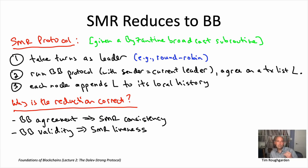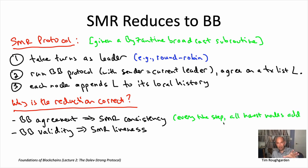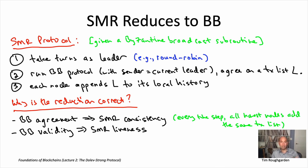Why does the safety property for Byzantine broadcast imply the one for SMR? This broadcast subroutine satisfies agreement, which says no matter what — whether or not the sender is Byzantine — the honest nodes all agree on the same value at the end of the day. Looking at our SMR protocol, that means at the end of step two, whether or not the current leader is Byzantine, all honest nodes agree on exactly the same ordered list of transactions capital L. Because they agree on capital L, in step three all honest nodes add exactly the same thing, capital L, to their local histories. So just like in our naive protocol, we have consistency because the nodes operate completely in lockstep — every time step they add exactly the same new list of transactions. By induction, they all start with the empty history and every time step have the same thing, so their histories are always exactly the same. That's SMR consistency.